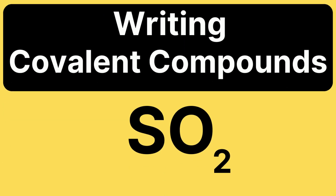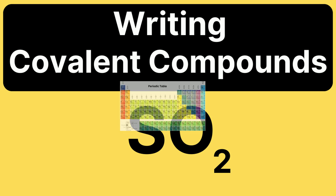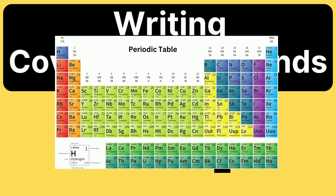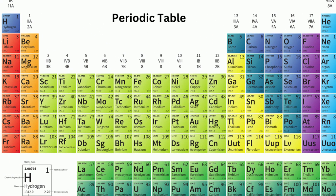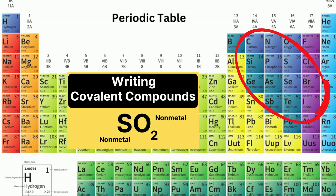In this video, I'd like to talk about writing covalent compound formulas. Covalent compounds are composed of two non-metals. You can find the non-metals on the right side of the periodic table.